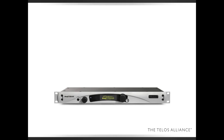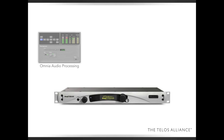We'll start with the ProStream and let's look at what's inside of it. First of all, your audio comes in either through XLR or a LiveWire connection. The first thing it gets to is the Omnia audio processing that's built in. You can bypass it if you have some external processing, but you really want to use this processing if you can.